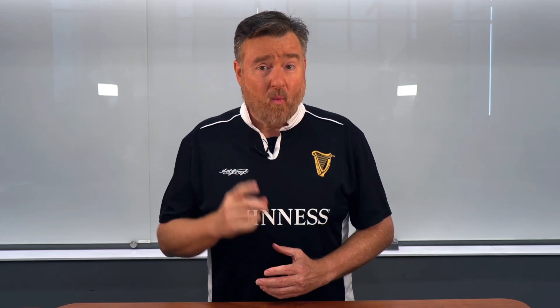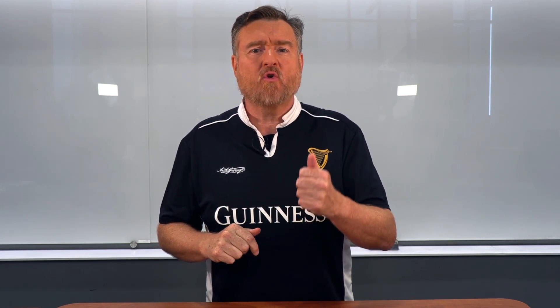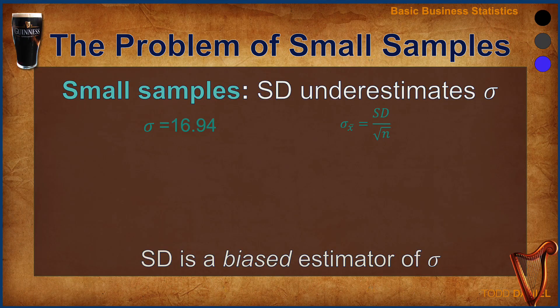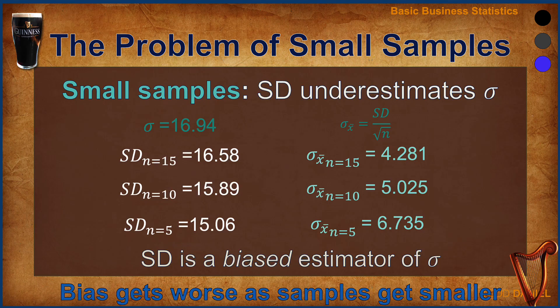However, when your sample size drops below 30, the standard error can increase dramatically. For sample sizes of 15, the standard error of the mean more than doubled. Lose 5 more members of the sample and the error goes up nearly a full point. Lose 5 more after that and the error is more than triple what it was at 30. The sample standard deviation is a biased estimator of the population standard deviation. As sample size gets smaller, that bias gets worse.